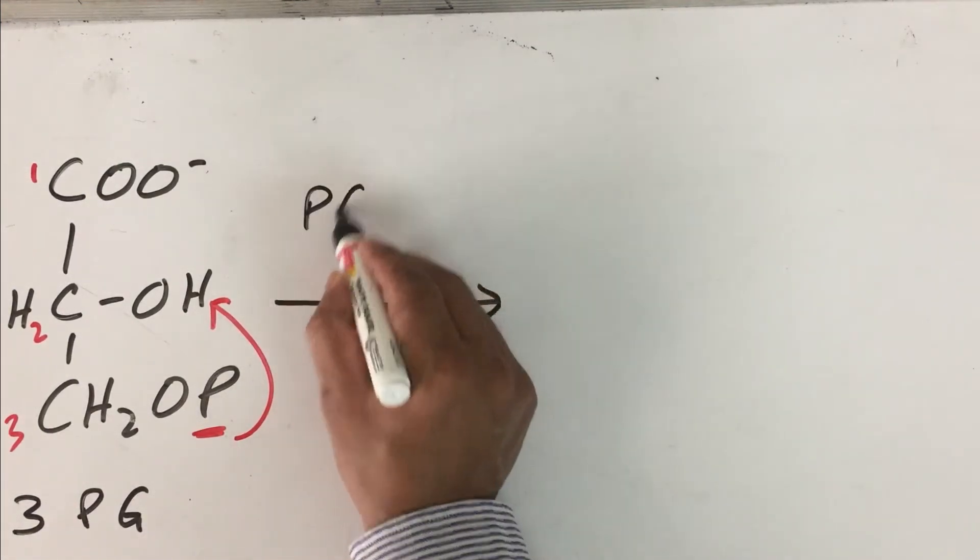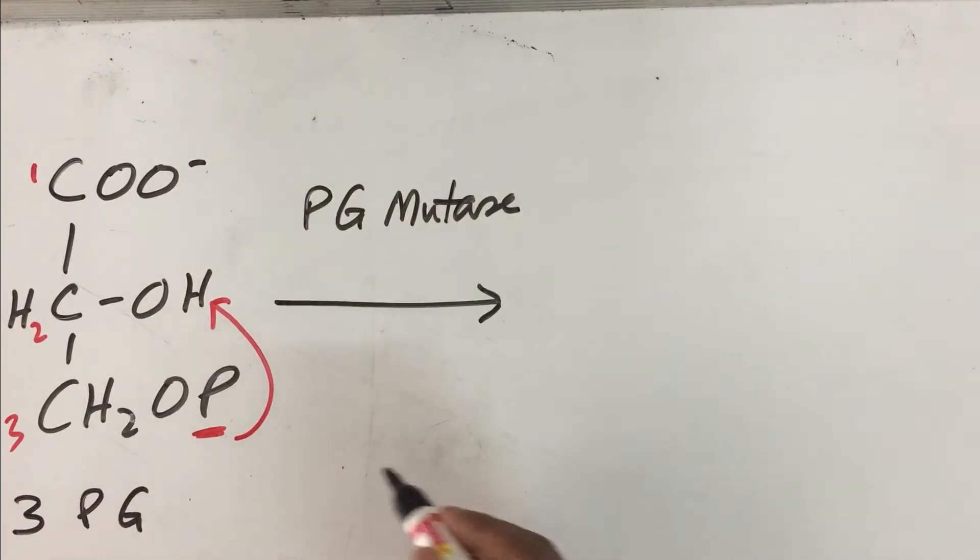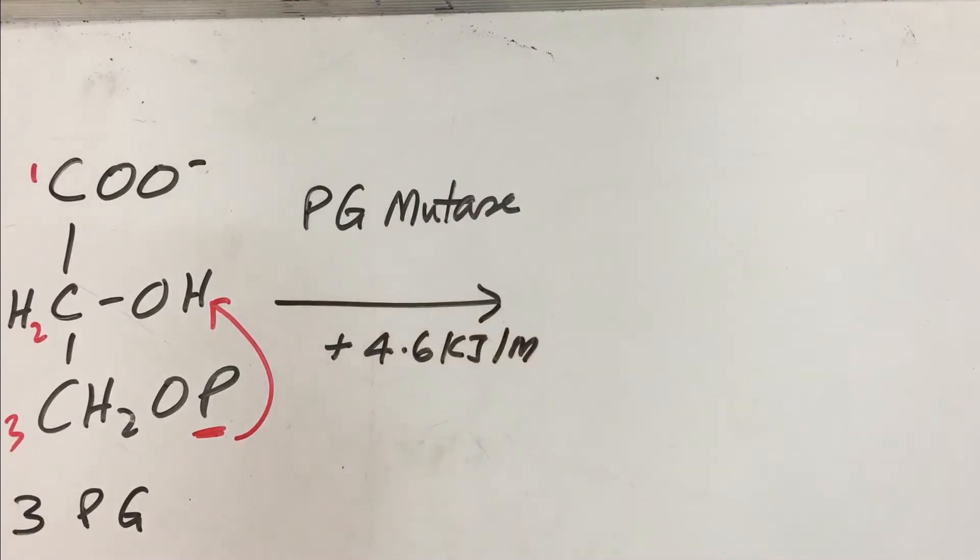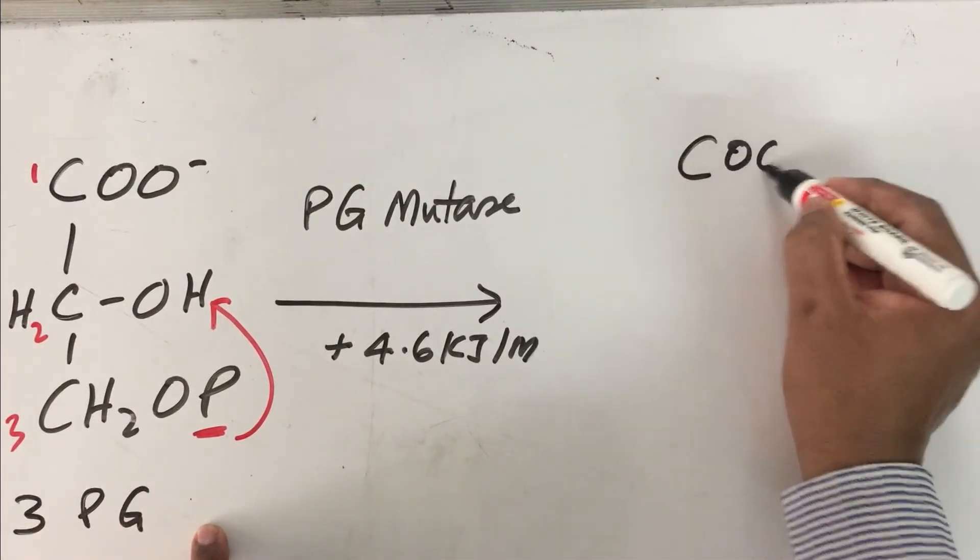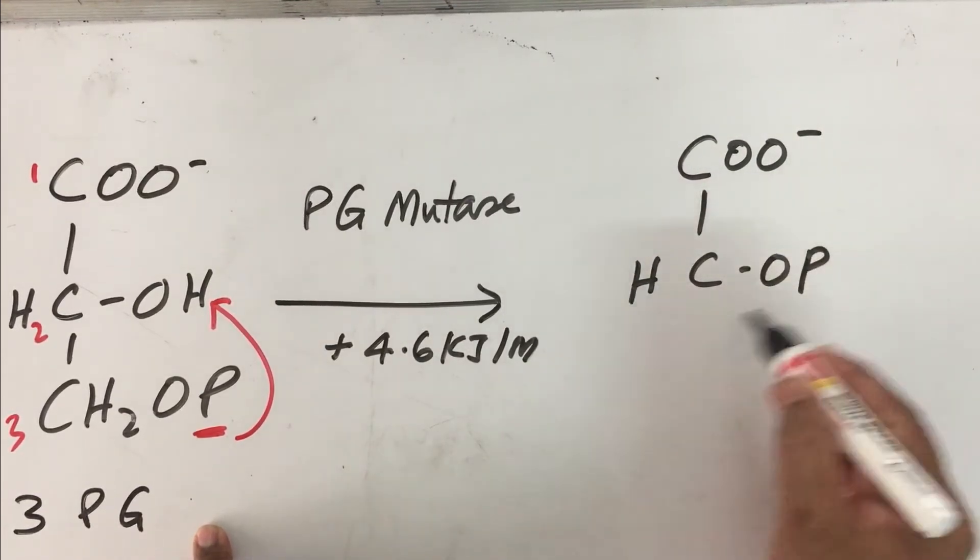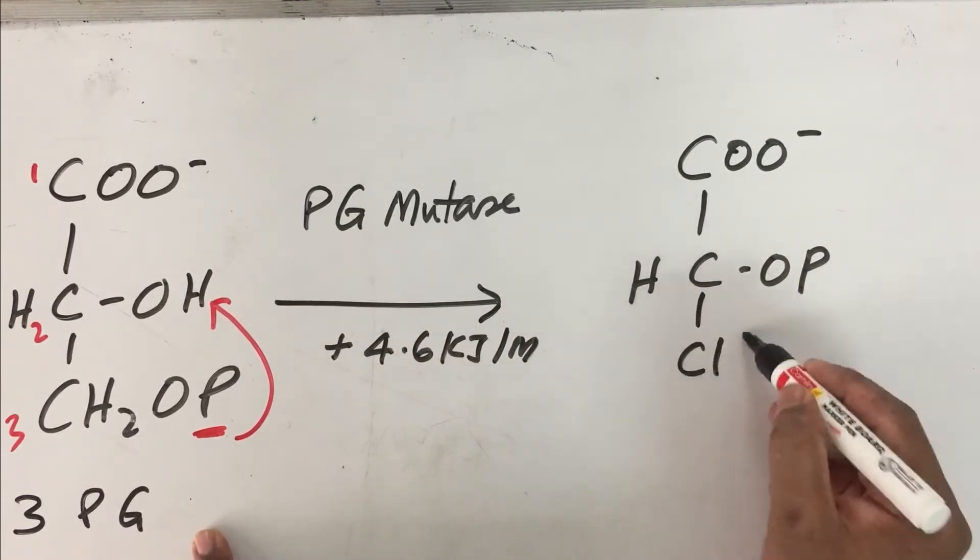Now let us understand the eighth step in glycolysis. We are with 3-phosphoglycerate. The next step is to shift this phosphate group from the third position (1, 2, 3) to the second position. Any enzyme which shifts a group within the structure is called a mutase, so therefore the enzyme name is phosphoglyceromutase. The delta G of this reaction is 4.6 kilojoules per mole. The final product is COOCOP with the phosphate group shifted to the second position, and CH2OH.